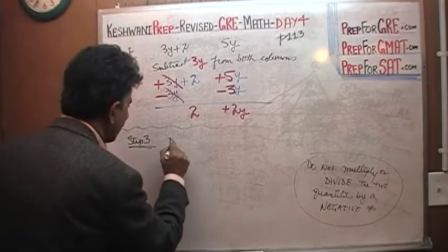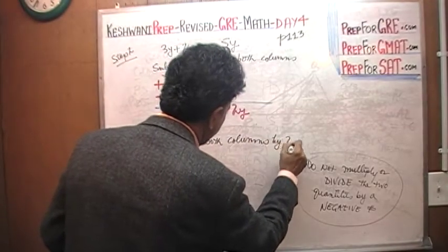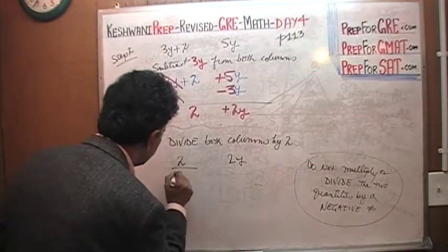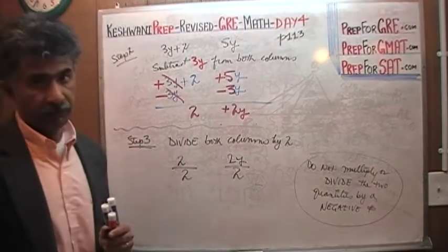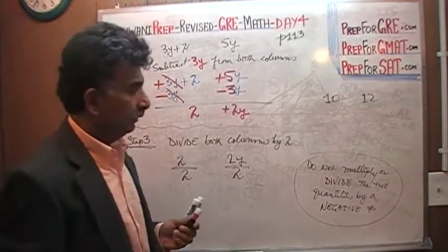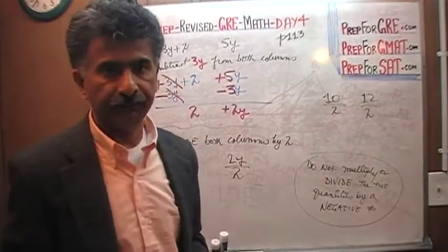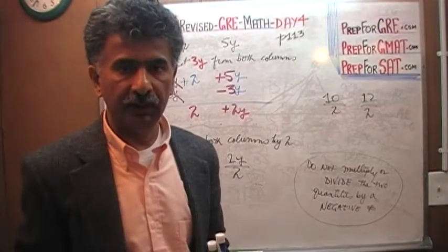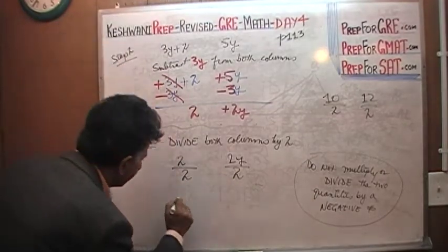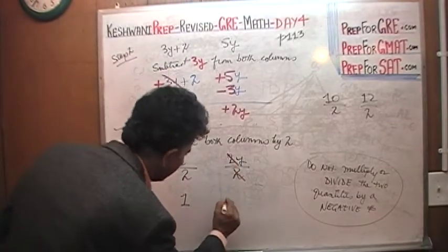Step 3: divide both columns by 2. We have 2 versus 2Y. Divide both columns by 2 — this is perfectly legal since we're dividing by a positive number. 2 divided by 2 is 1, and 2Y divided by 2 is Y. So now we simply compare 1 versus Y.